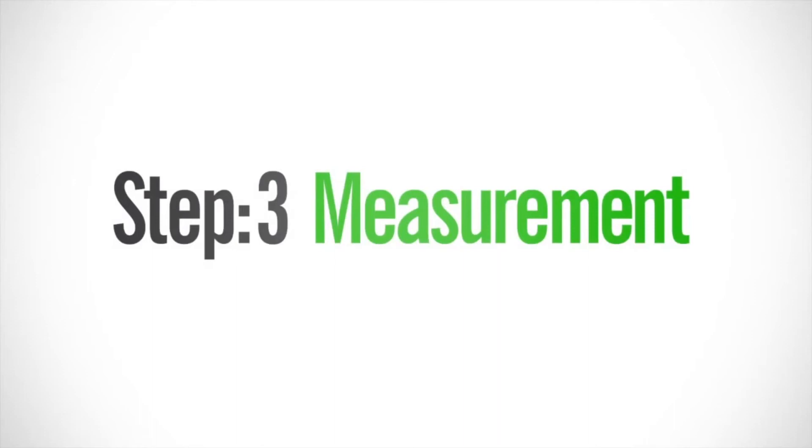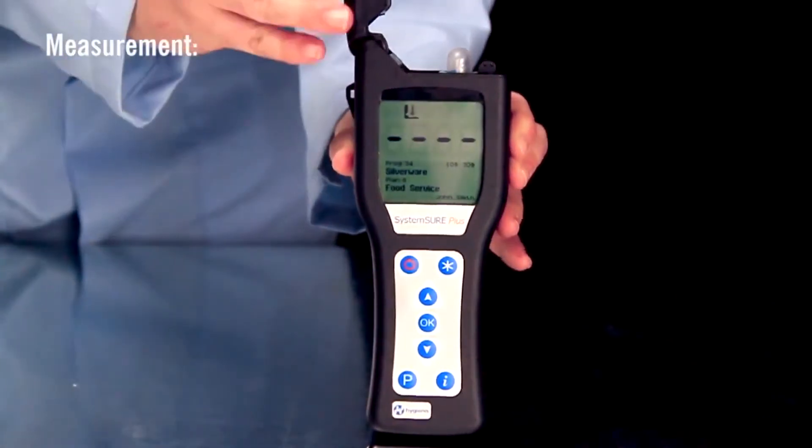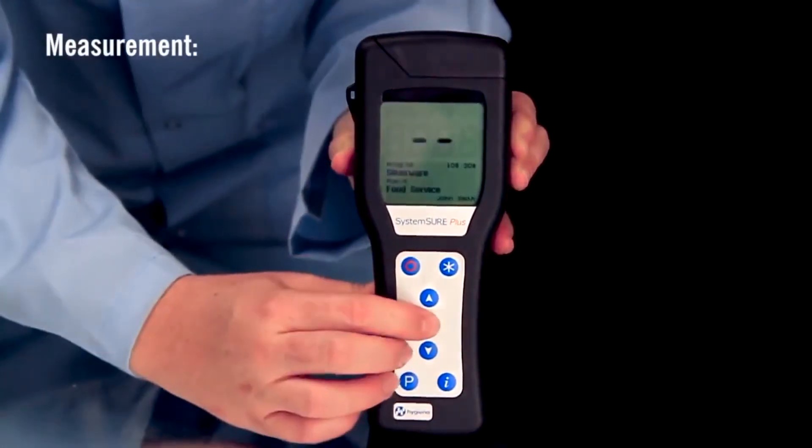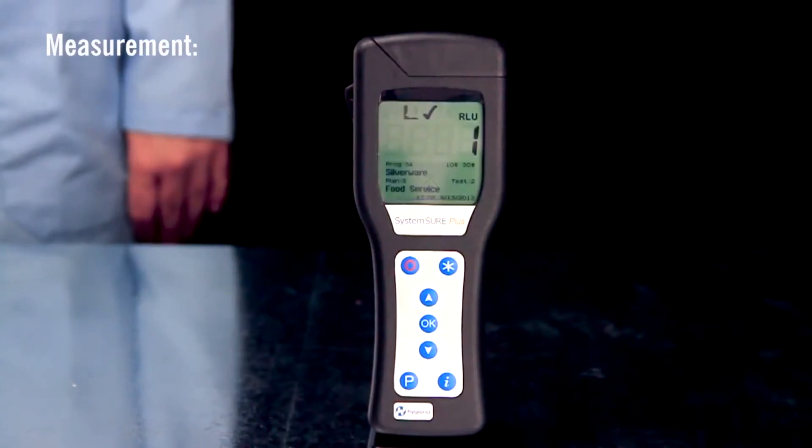The final step is measurement. Insert the test into the read chamber and close the lid. Holding the luminometer upright, press OK to initiate measurement. Results will be displayed in 15 seconds.